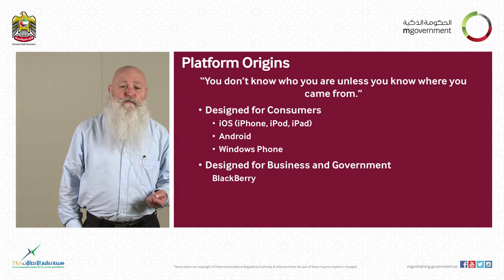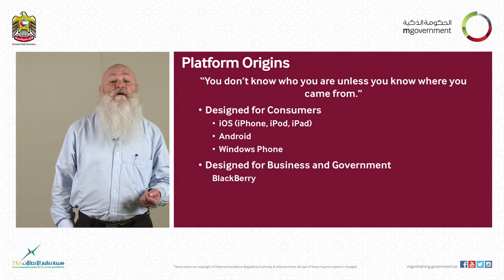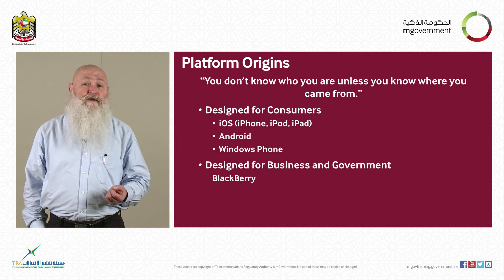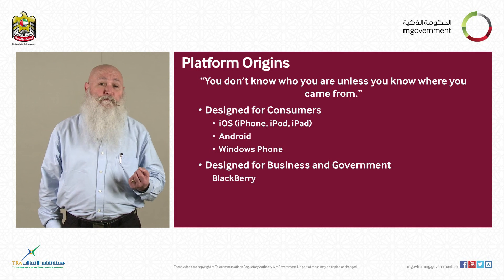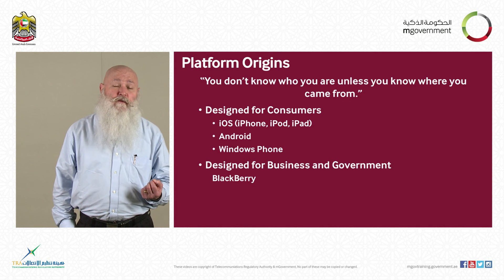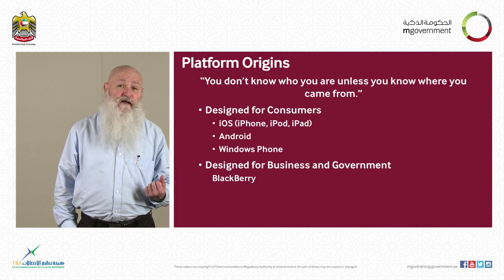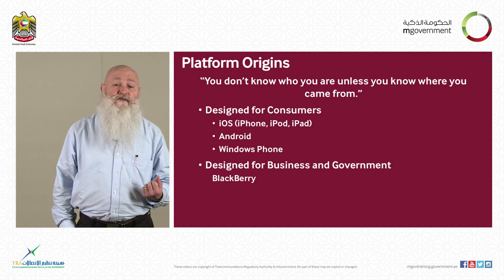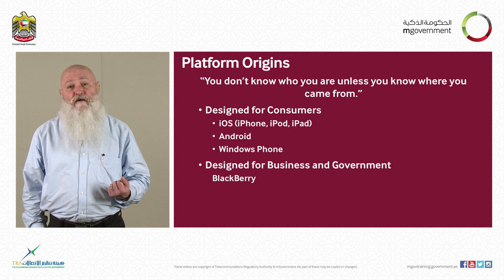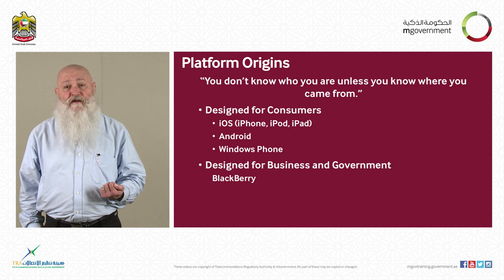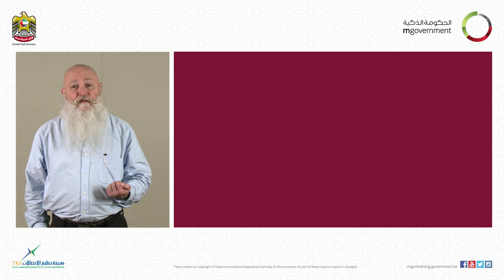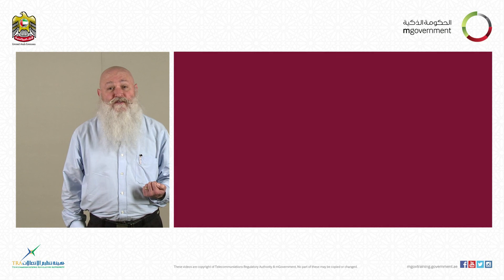To recap: you don't know where you are unless you know where you came from, and it's important to consider the origins of these four platforms when we talk about security. Blackberry is the only one of the four that was designed with business and government use in mind, with security as a primary design consideration. Windows, Android, and the iPhone were originally designed as consumer devices, with ease of use and user experience as their primary design considerations. Thank you. That concludes this introductory module.